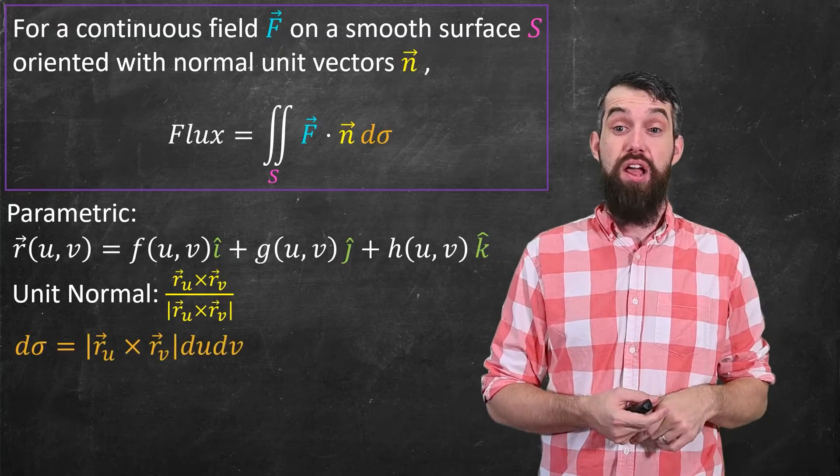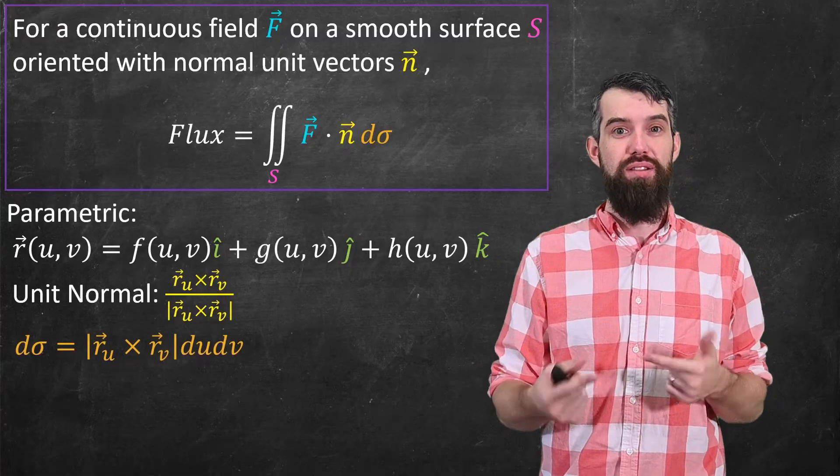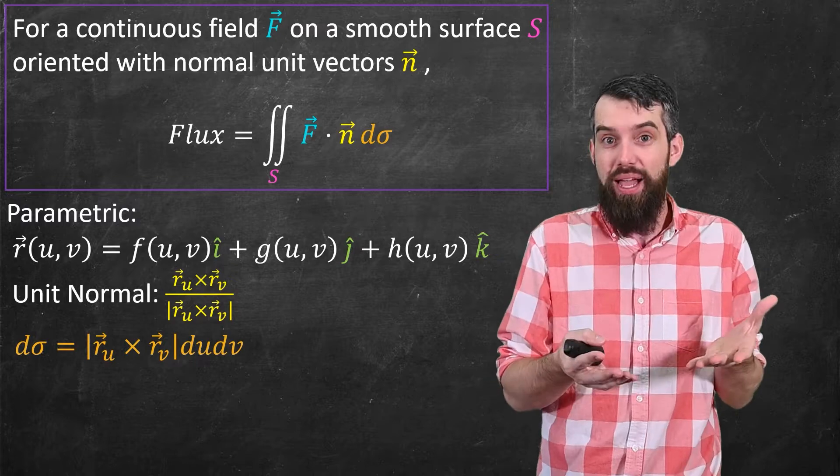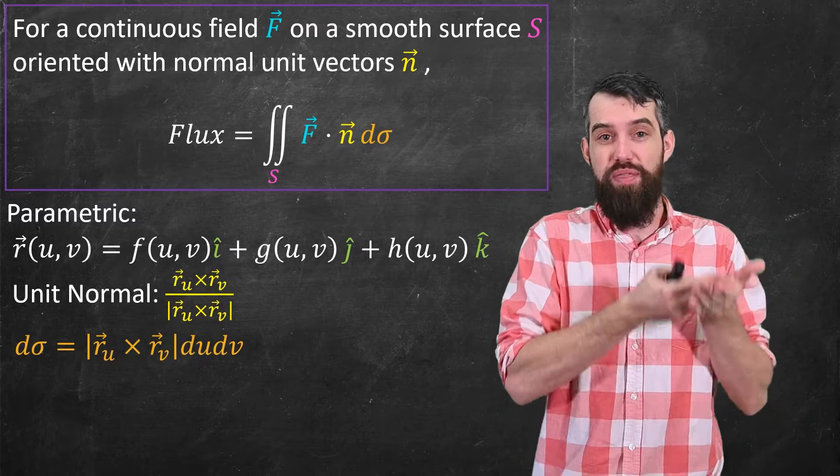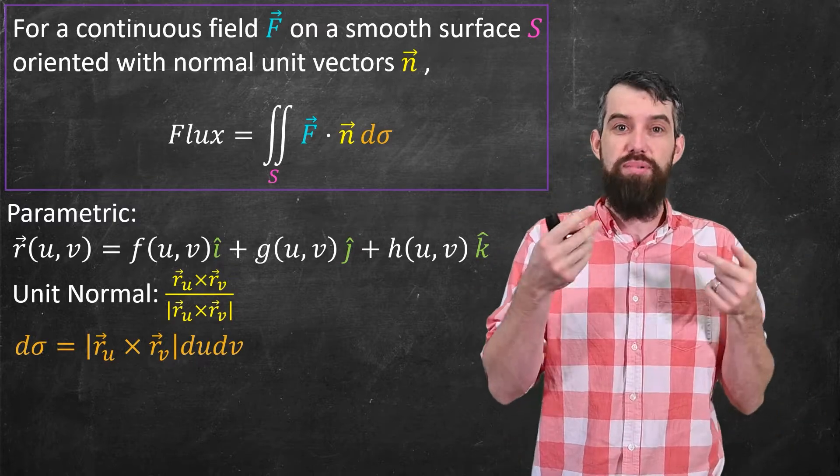Similarly, we've seen before that for a parametric description, the little element of surface area can be described d sigma as the length of that cross product, the length of r u cross r v, and then times du dv.